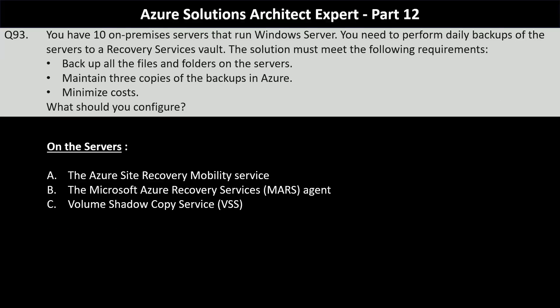Question number 93. You have 10 on-premise servers running Windows Server. You need to perform daily backups of the servers to a recovery services vault. The solution must backup all files and folders on the servers, maintain three copies of the backups in Azure, and minimize costs. For what to configure on the servers, your options are the Azure Site Recovery mobility service, the Microsoft Azure Recovery Services agent, or Volume Shadow Copy Service (VSS).